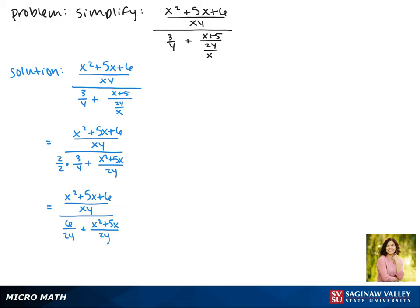Now that we have a common denominator in the denominator, we can combine these terms. So what we get is x squared plus 5x plus 6 over xy divided by 6 plus x squared plus 5x over 2y.